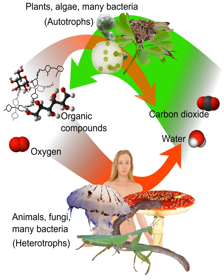Heterotrophs represent one of the two mechanisms of nutrition, or trophic levels, the other being autotrophs — 'auto' meaning self, 'troph' meaning nutrition. Autotrophs use energy from sunlight, as photoautotrophs, or inorganic compounds, as lithoautotrophs, to convert inorganic carbon dioxide to organic carbon compounds and energy to sustain their life.